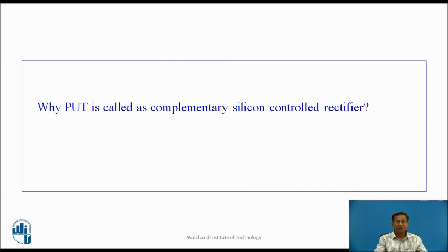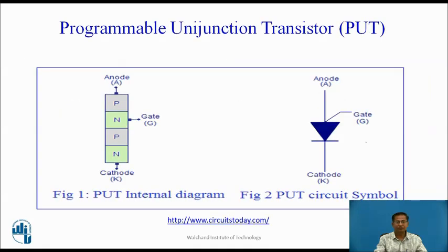Why PUT is called as Complementary Silicon Controlled Rectifier? Generally, in SCR, the gate is connected to the P region, that is, near to the cathode. But in PUT, the gate is connected to the N region. That is why the PUT is called as a Complementary Silicon Controlled Rectifier.